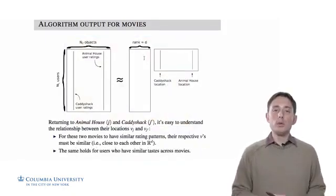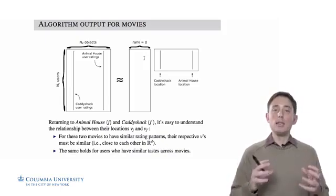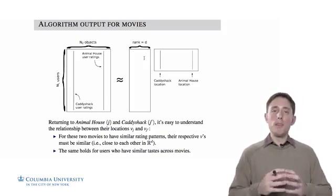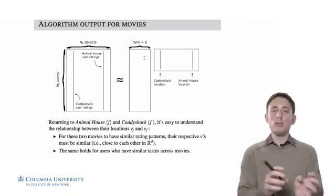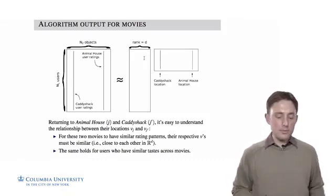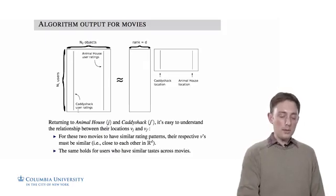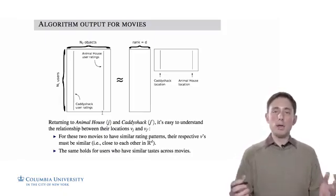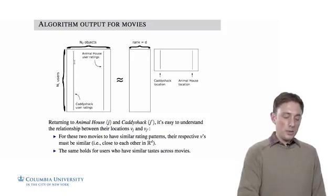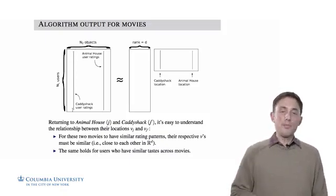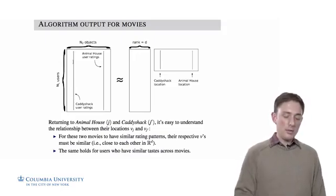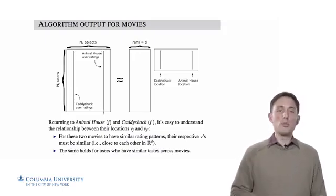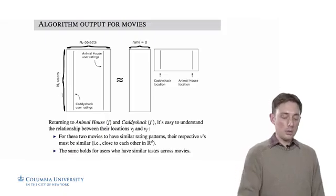Now if we return to the original example that I showed, it's easy to understand why this latent space embedding of users and objects should end up being interpretable, where proximities between things will be meaningful. For example, if we look at the movies Caddyshack and Animal House, and we agree a priori that they're very similar, and users should rate them similarly, whether they like them or not, we then have that this column is the column of the ratings that were given to the movie Caddyshack, and this is the column of ratings given to the movie Animal House across all of the users.